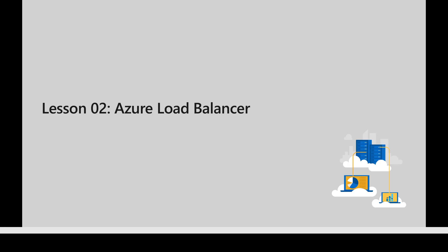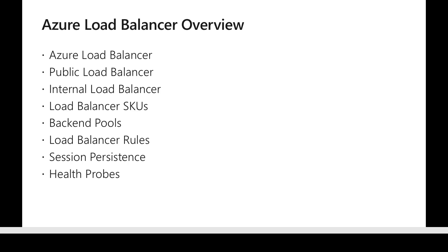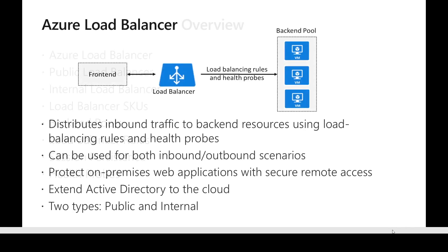Welcome back. We are going to look at the second lesson of this module called Load Balancer. In this topic we will see what is a load balancer, what are the different types of load balancer, and what are the configuration steps involved. A load balancer is an Azure component which helps in designing high availability solutions across our applications. It distributes traffic coming inside the network and sends it back to a pool of backend resources using load balancing rules, and it uses health probes to check whether the backends are healthy.